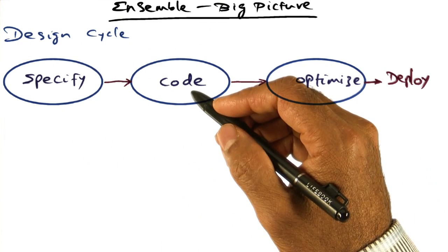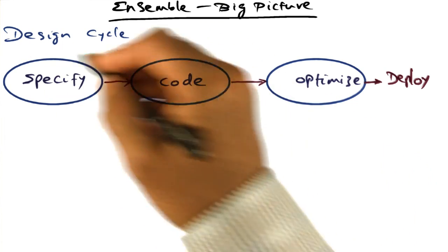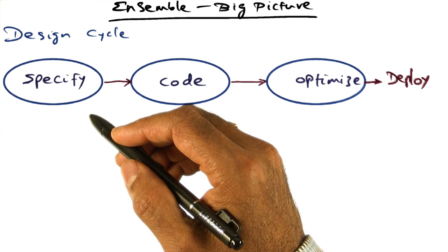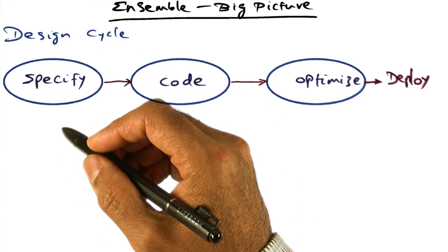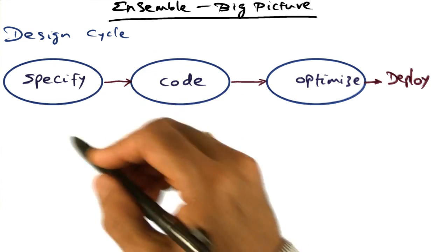So the idea is to put theory and practice together in the design cycle. Theory is good for expressing abstract specifications of the system at the level of individual components.